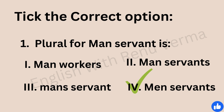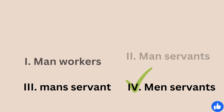The answer is 'menservants'. Manservant is a compound noun made up of two words: 'man' and 'servant'. So we pluralize both words — 'man' becomes 'men' and 'servant' becomes 'servants'. Therefore the correct plural form of 'manservant' is 'menservants'. I hope that's clear.